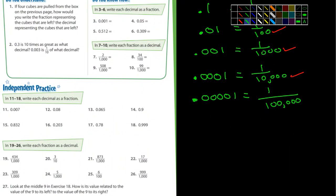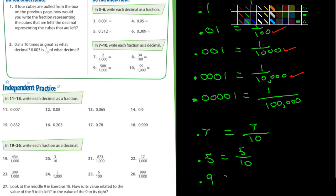What if I wrote 0.7 as a fraction? Ms. Noble: 7 over 10. What about 0.5? Mr. Delgado: 5 over 10. And 0.9? Ms. Adams: 9 over 10.